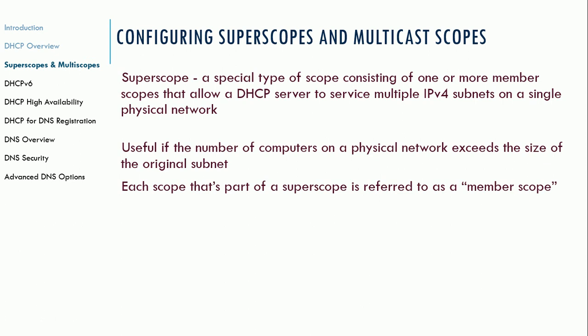Superscopes and multicast scopes are somewhat of a hack in the Microsoft world. When we talked before about DHCP, we know that DHCP works with broadcast addresses, which means it's restricted to one IP subnet range.